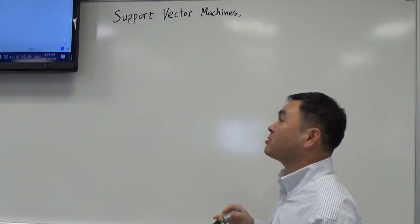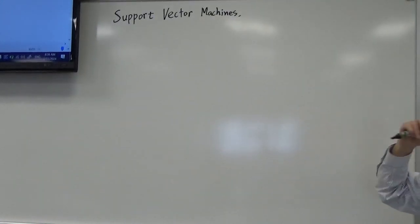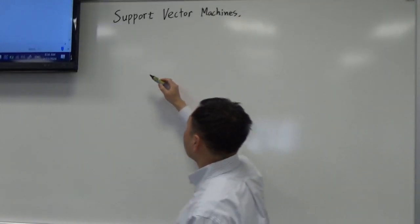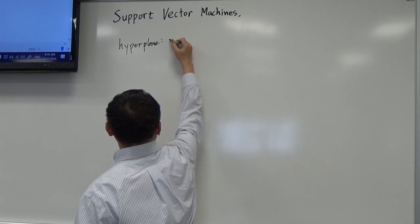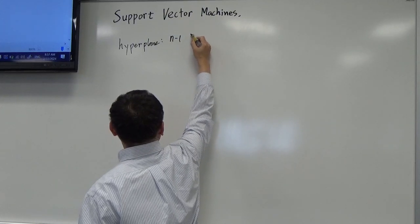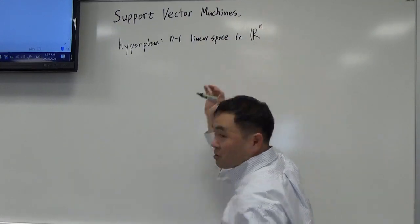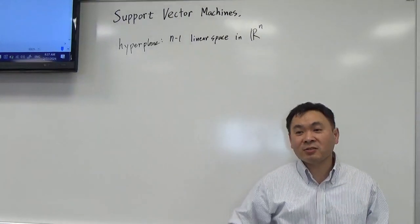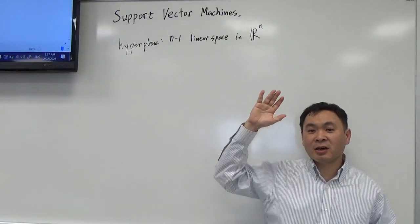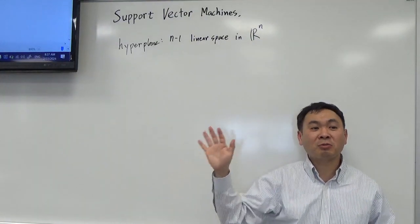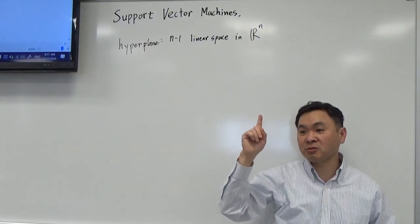We are going to talk about hyperplanes. I usually try to explain data sets in 2D, but we'll try to do this in 3D. When you say hyperplanes, that means an n minus 1 linear space in Rn. So for example, if you have a 4-dimensional space, it's impossible to imagine what it looks like, but let's say you can — then you can think of a 3-dimensional subspace in there. So there's a co-dimension one difference between these two things.